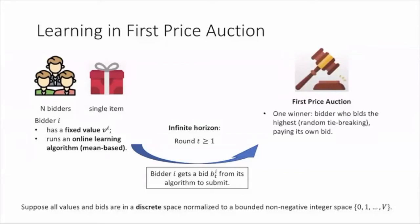A first price auction is run given the bids submitted by the bidders. There is one winner, who is the bidder that bids the highest. If multiple bidders bid the same highest amount, the winner is chosen uniformly at random. The winner will pay its own bid and get utility equal to its value minus its bid, while other bidders get zero utility.